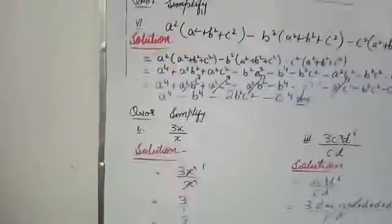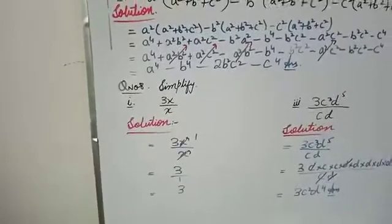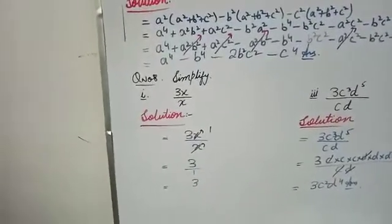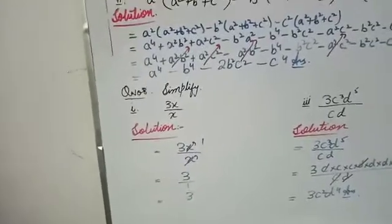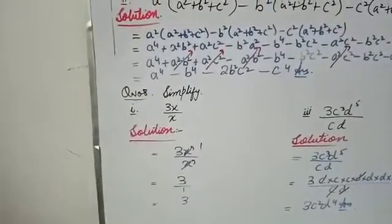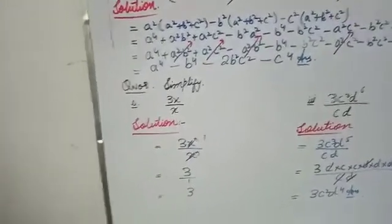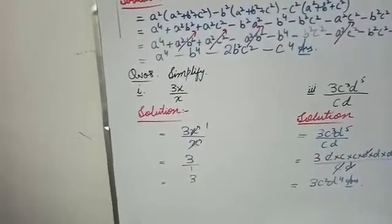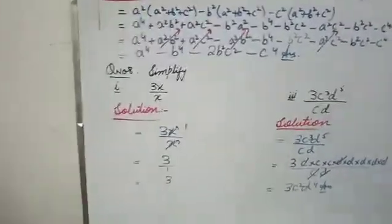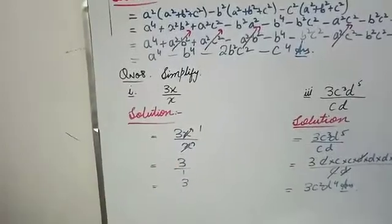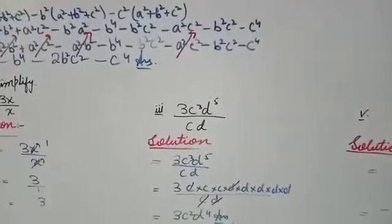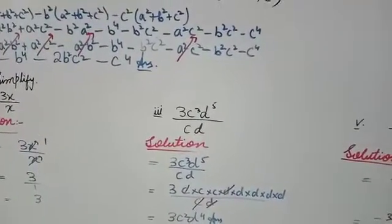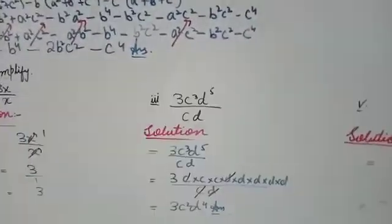Now comes question number 8, which is very easy — we have to do cancellation. You have some fractions to solve. The first part is 3x divided by x. As you know, x and x are the same, so cancel x — the rest is 3 over 1, which equals 3. Then the third part: 3c³d⁵ divided by cd.